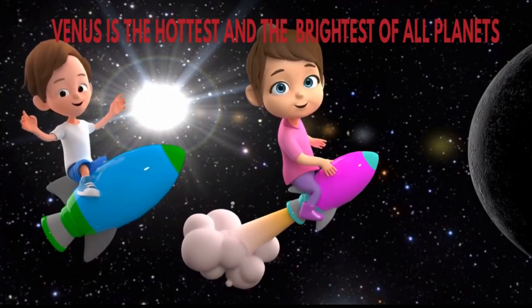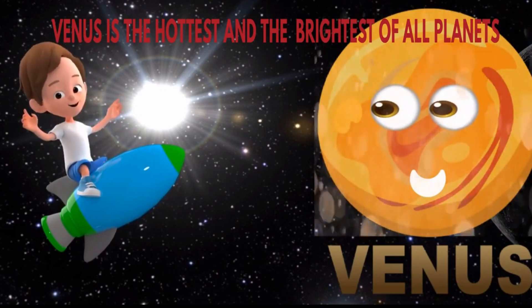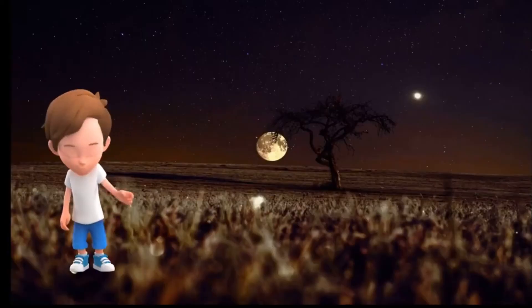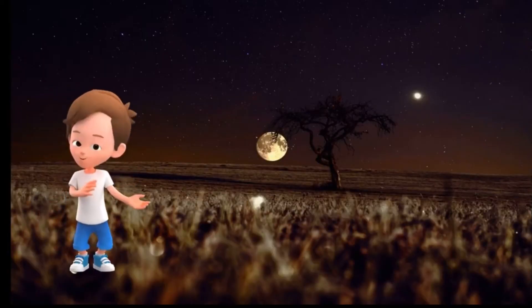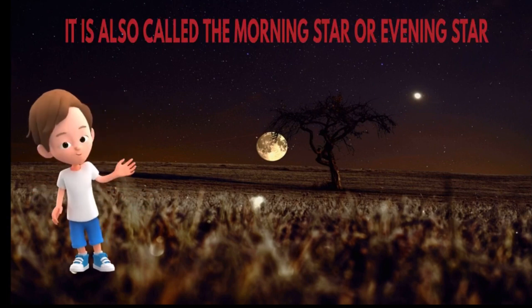The second planet, Venus, is the hottest and the brightest of all planets. As it can be seen in the morning and evening, it is called the morning star or evening star.